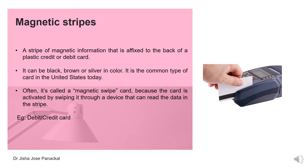Magnetic stripes — you may see this stripe on the debit or credit card of your bank ATM card. It is a stripe of magnetic information that is affixed to the back of a plastic card. That can be a credit or debit card. It can be black, brown or silver in color. It is a common type of card in the US today.